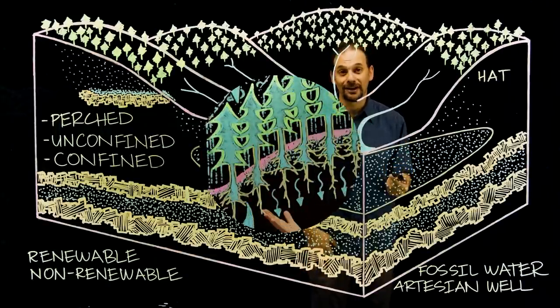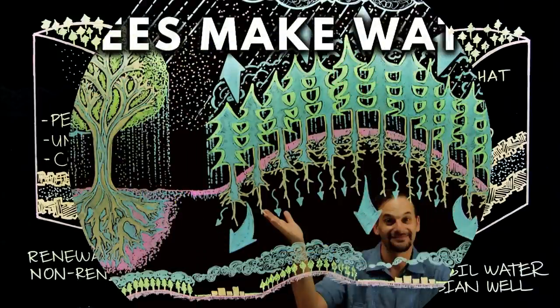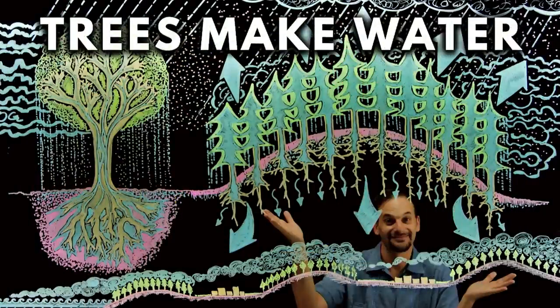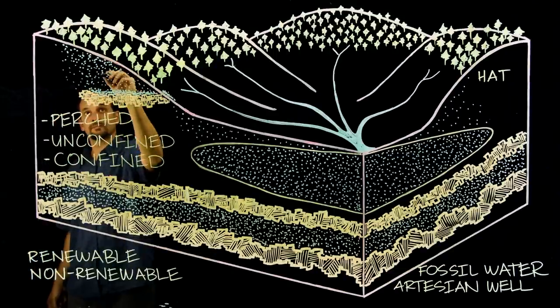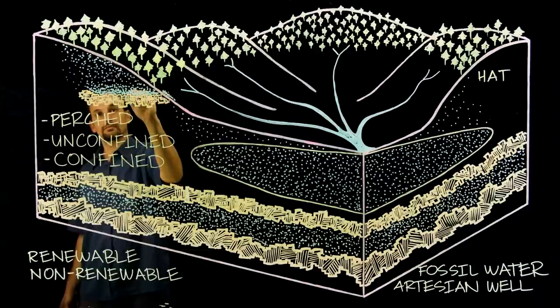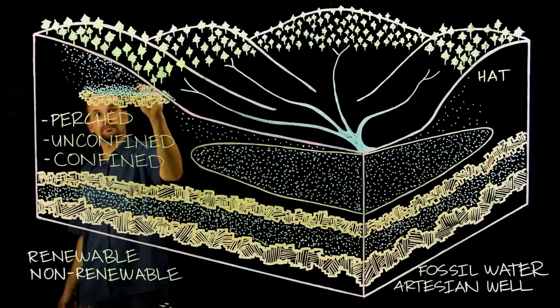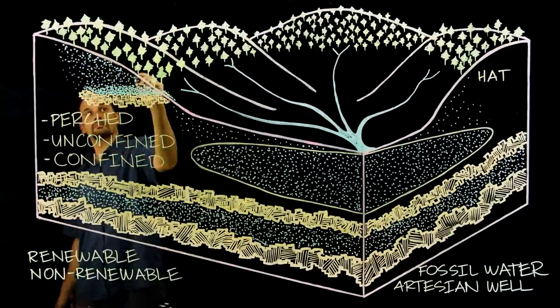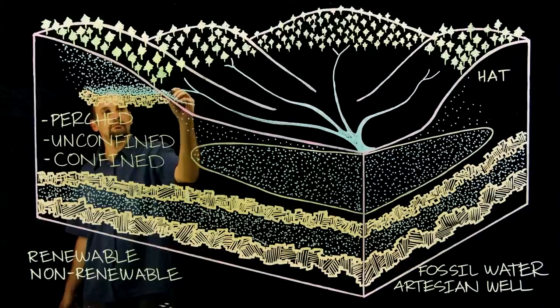I have an entire video on why hilltops should grow trees, so please watch How Trees Make Water. For a perched aquifer, the hilltop may comprise the entire catchment, so the effects of foresting the hilltop can mean a dramatic increase in water flowing from springs connected to that aquifer.